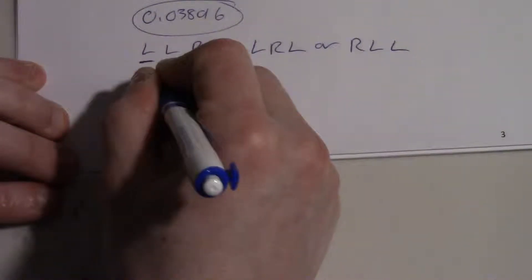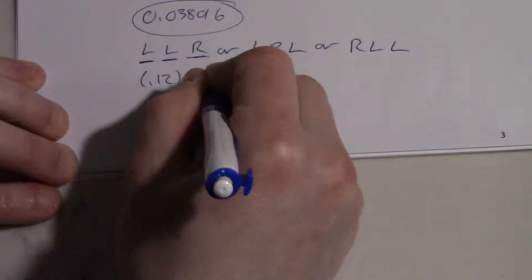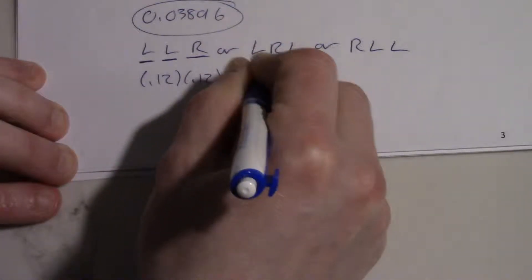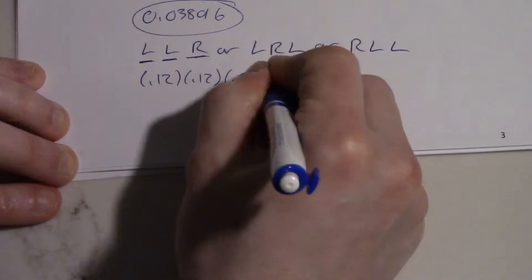So left left right is 0.12 times 0.12 times 0.88, and then we'll multiply that by 3.